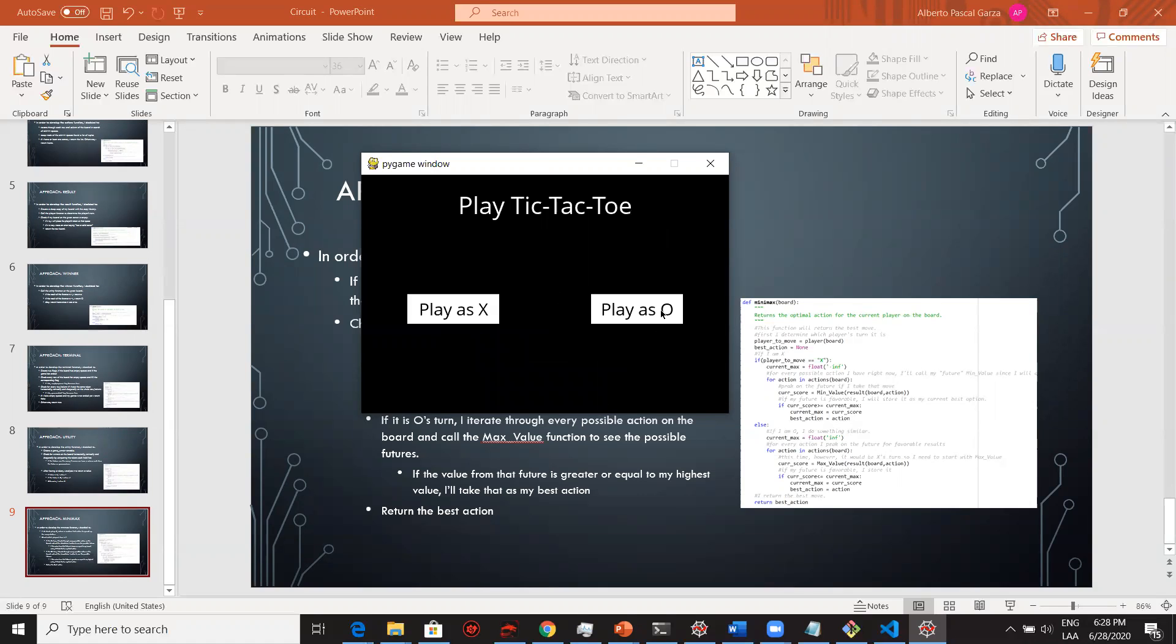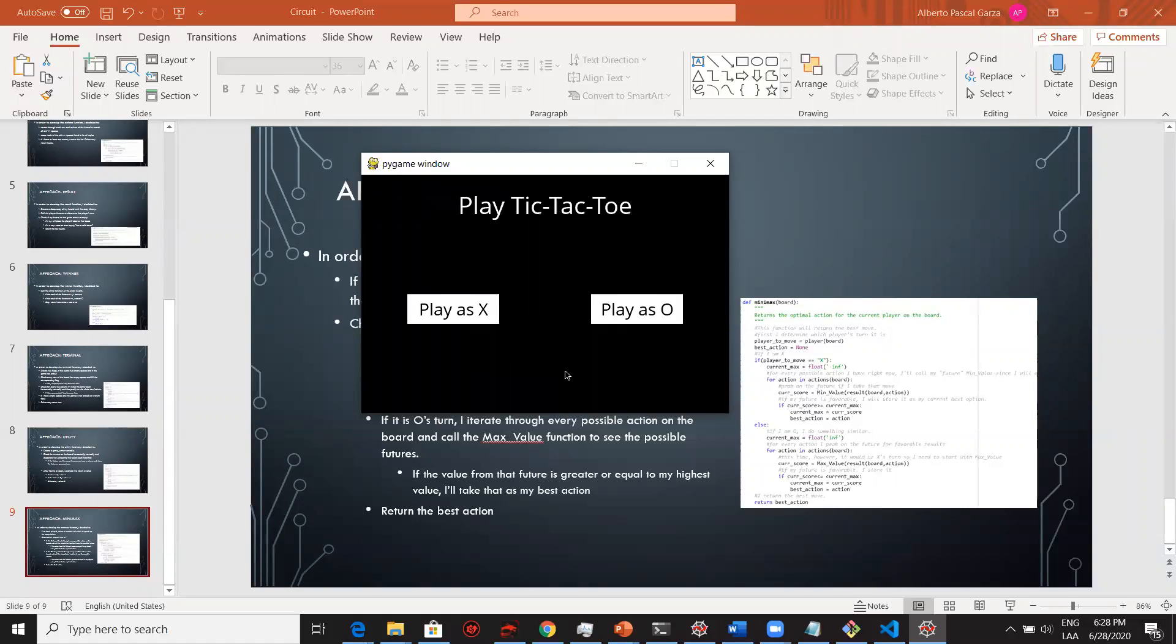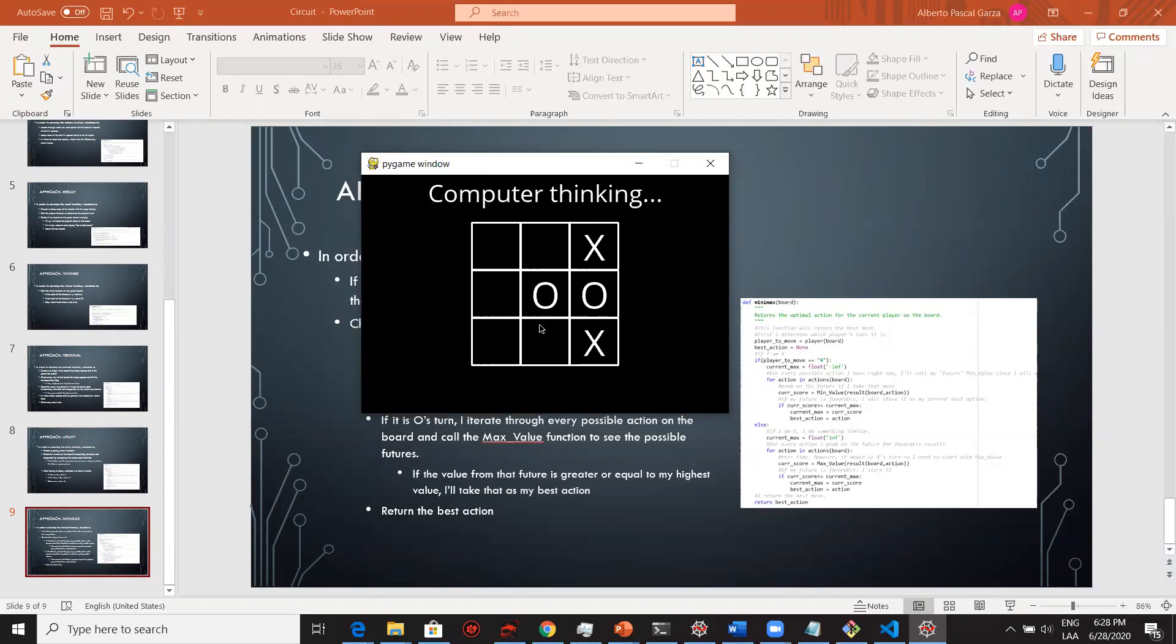On the other hand, I can play as O. The computer will play a random first position to speed up things. Because no matter where I play, the computer can still either win or tie. It will always win if I do not block the center space. But if I do put something in the center, I can get to tie.